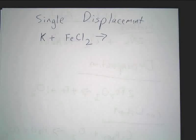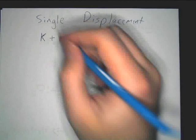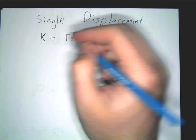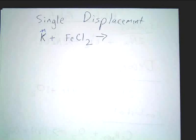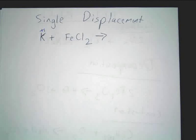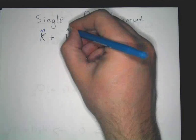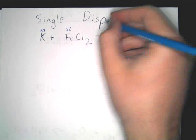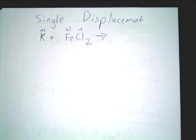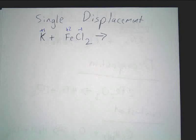Now, the first thing I recommend you do is go through and identify what the charges are on every single compound and element. So potassium's charge is positive one. Iron's charge is actually plus two in this case due to the fact that chlorine is negative one, and you have two of them, so iron's got to be positive two.